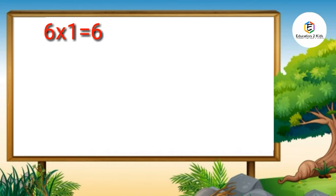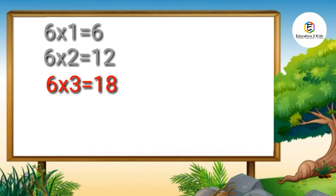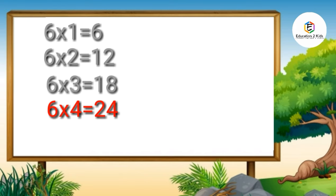Six ones are six. Six twos are twelve. Six threes are eighteen. Six fours are twenty-four.